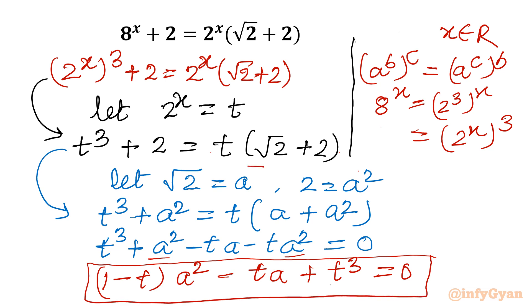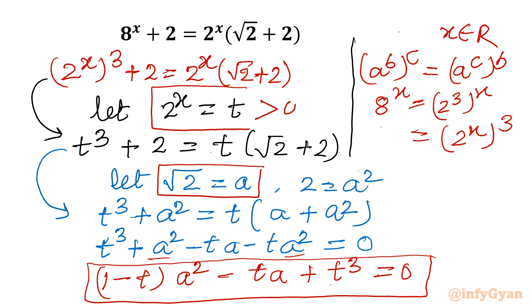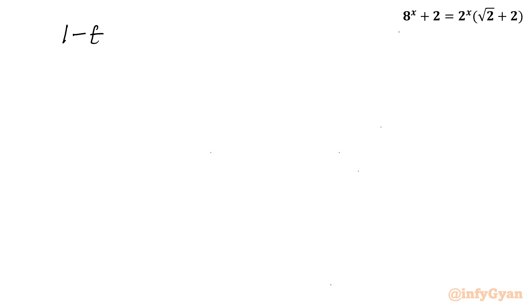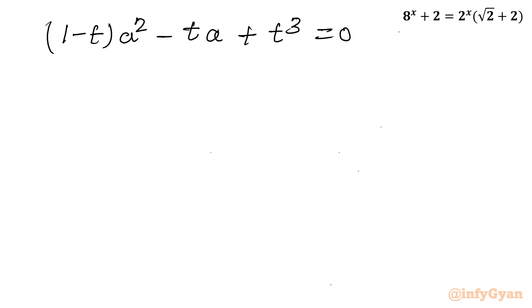Also, since 2^x = t and 2^x is always a positive function, t must be positive. Let us solve this quadratic equation using the quadratic formula. The equation is (1 - t)a² - ta + t³ = 0, and we are solving for a where a = √2.